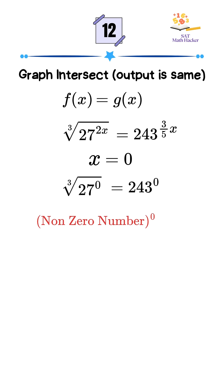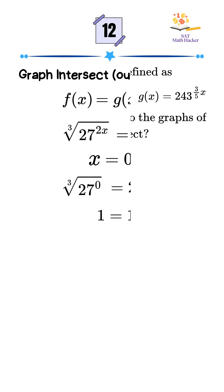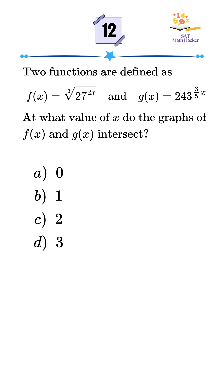Any non-zero number raised to the power of 0 is 1, so both sides become 1 and the equation holds true. That means x equals 0 is the correct solution, and that's option A. No need to check the other choices.